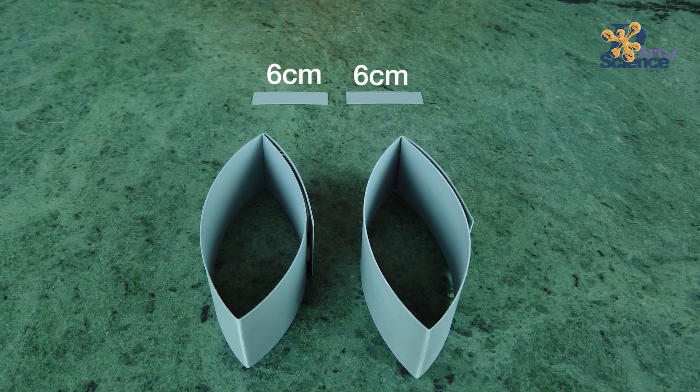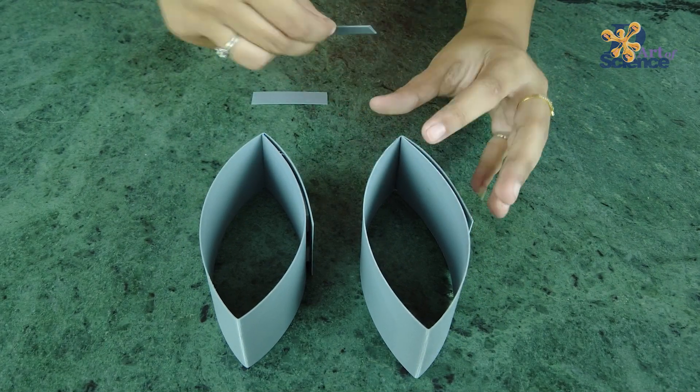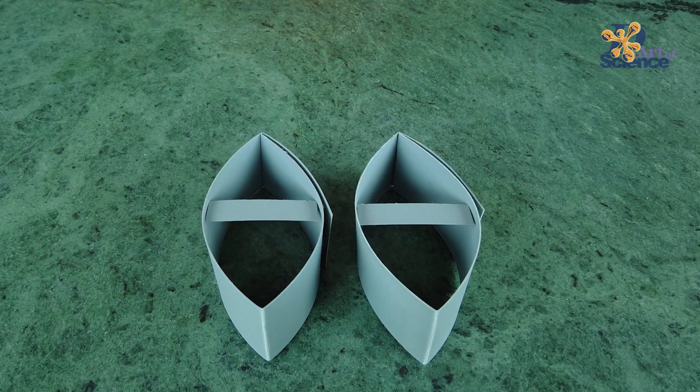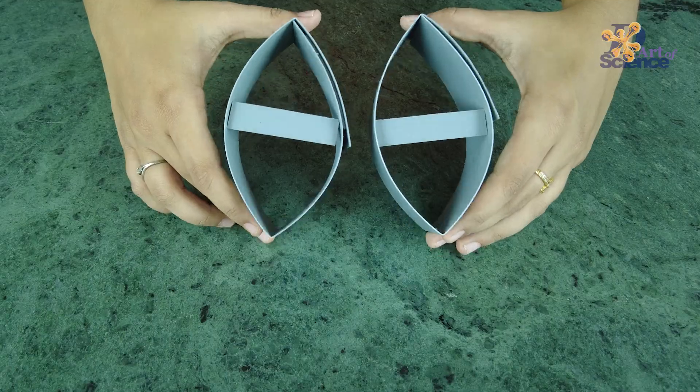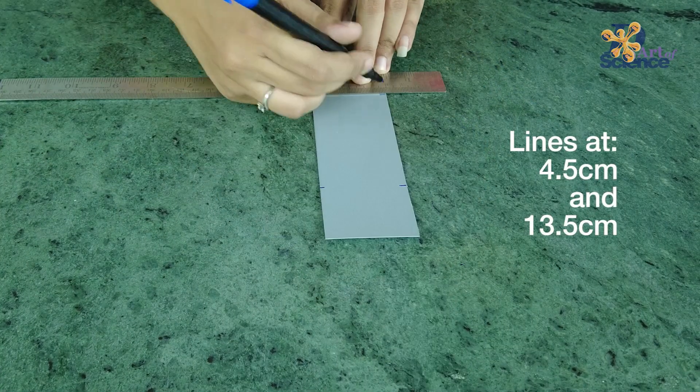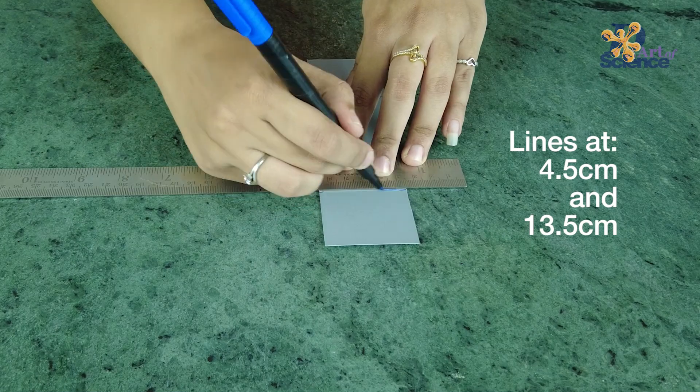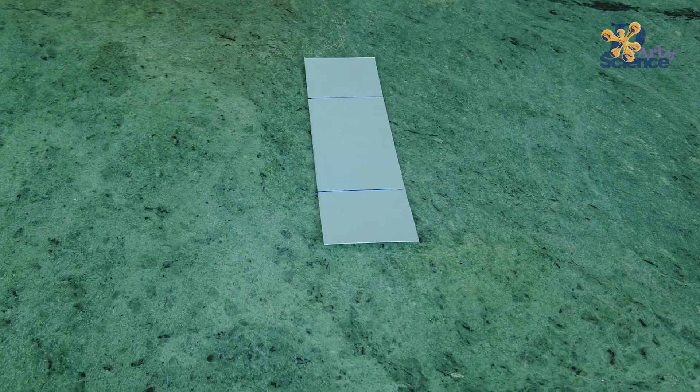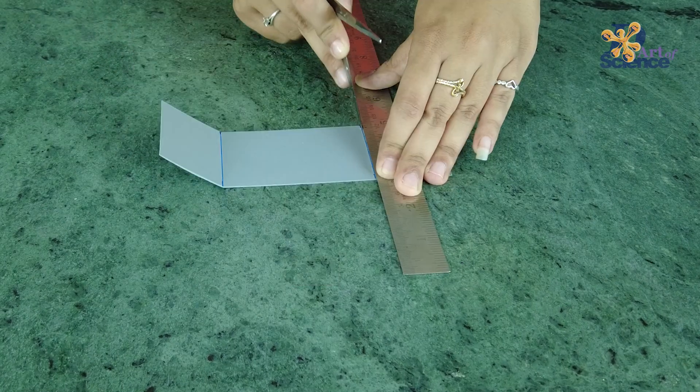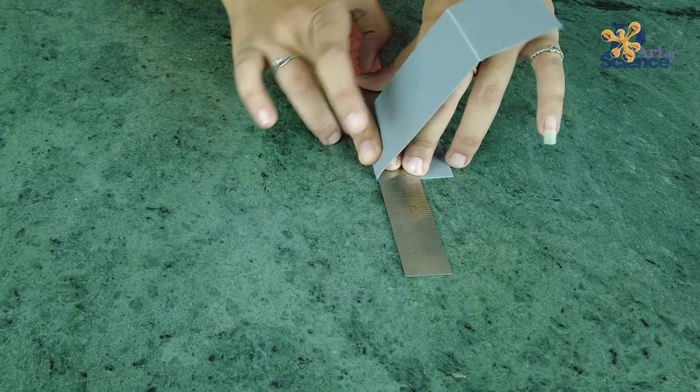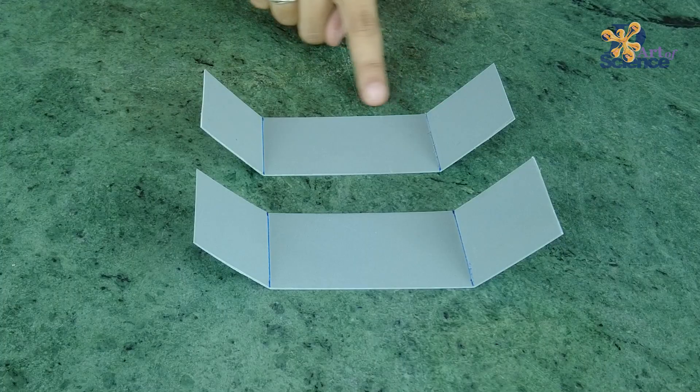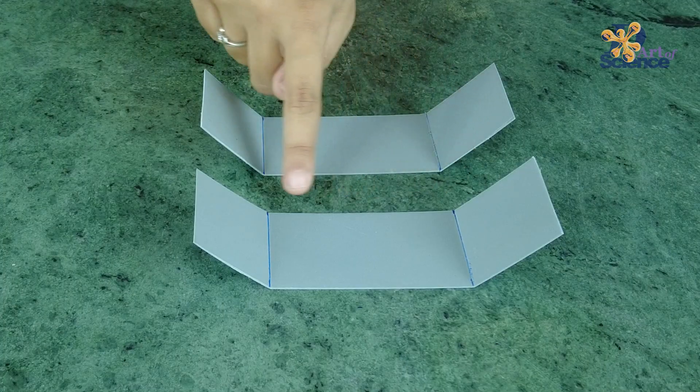Make two more small pieces measuring 6 centimeters in length to use them as spacers for helping the mold keep their shape. Take the shorter piece and mark two lines at 4.5 centimeters and 13.5 centimeters from the top. Fold them using the same method we used previously. Make sure that these two pieces are equal in length.